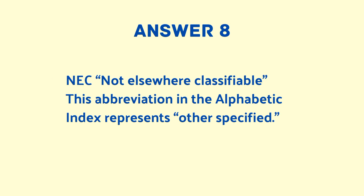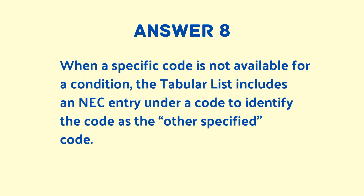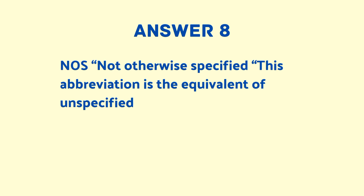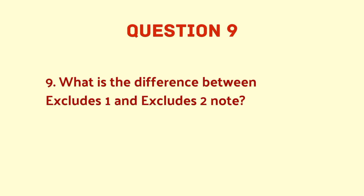What is the difference between NEC and NOS conventions? NEC means Not Elsewhere Classifiable. In the alphabetical index it represents 'other specified' — when a specific code is not available for a condition, the tabular list includes an NEC entry to identify it as the other specified code. NOS means Not Otherwise Specified, and is the equivalent of 'unspecified.'